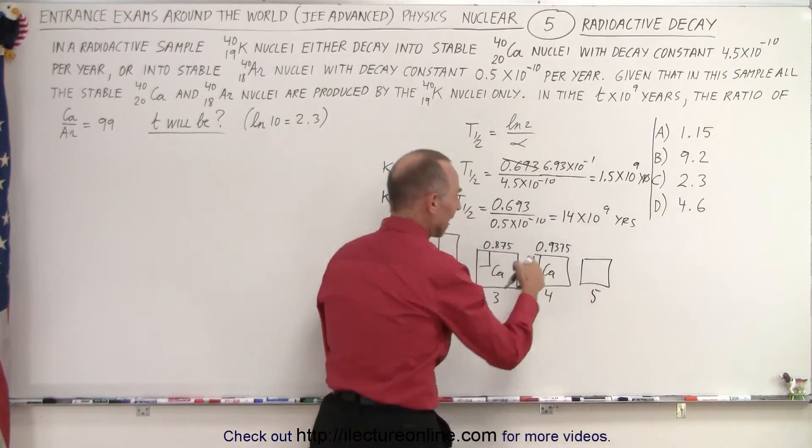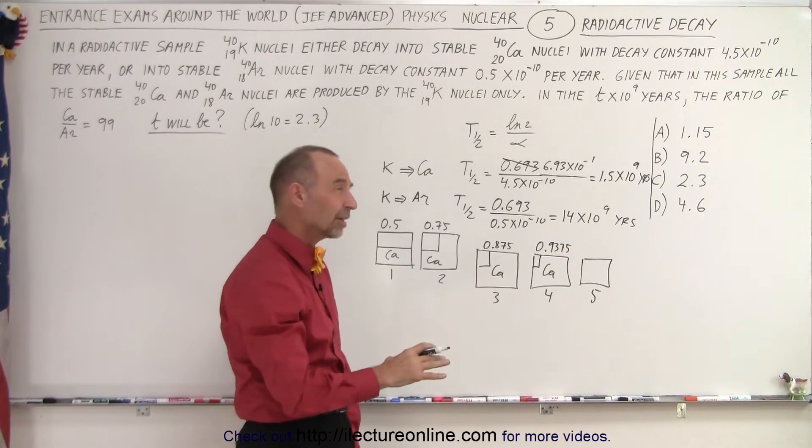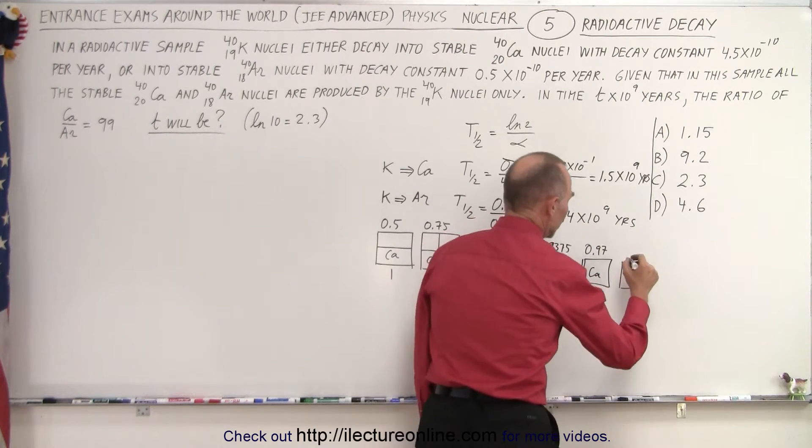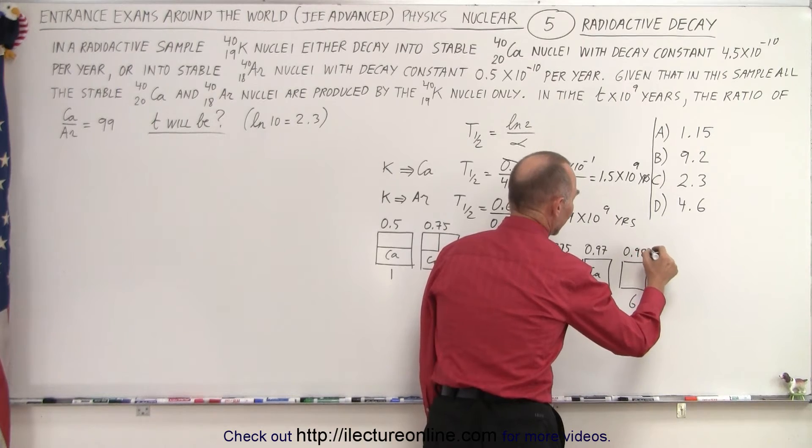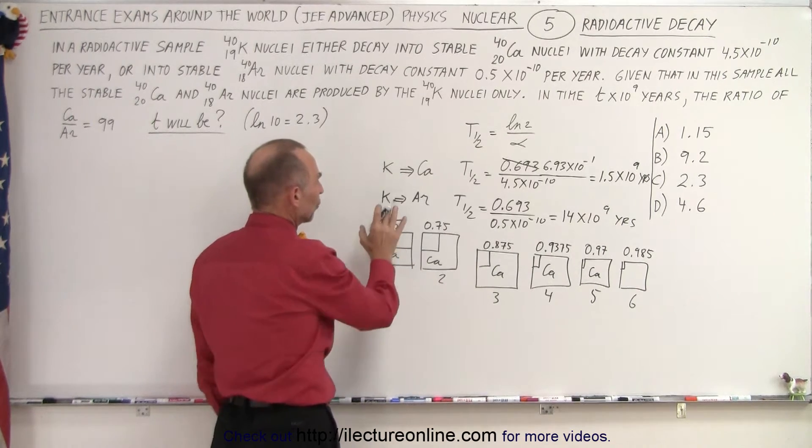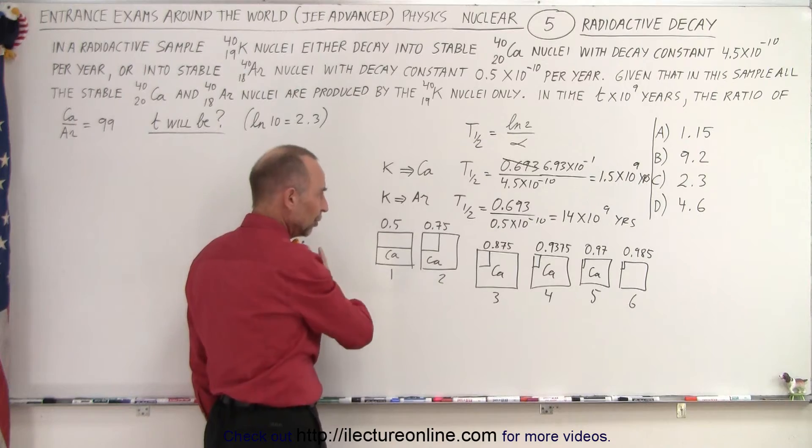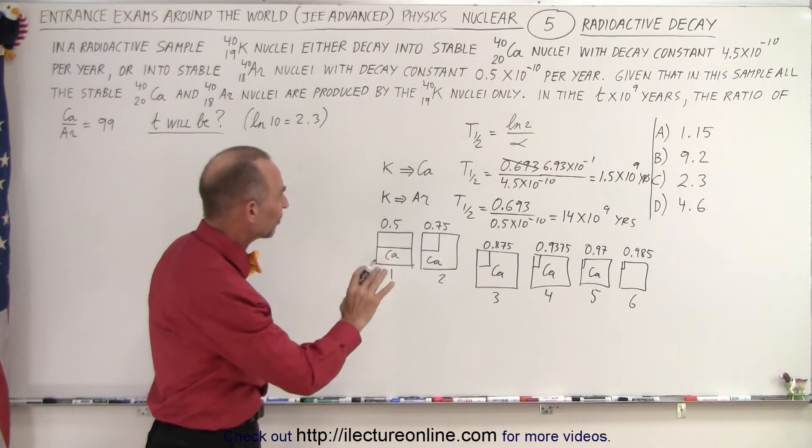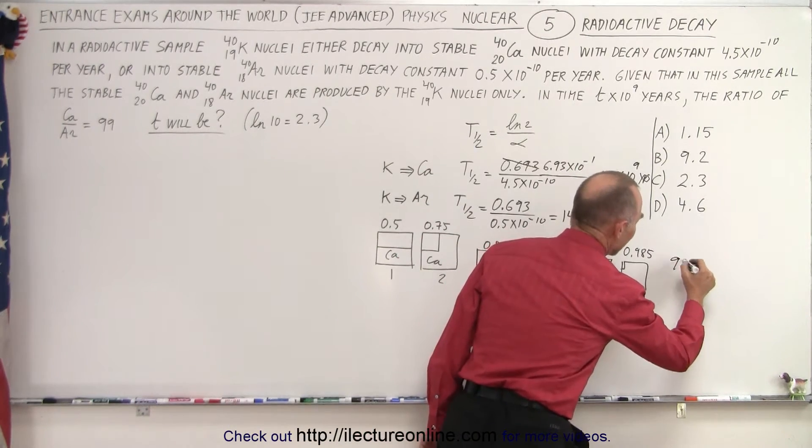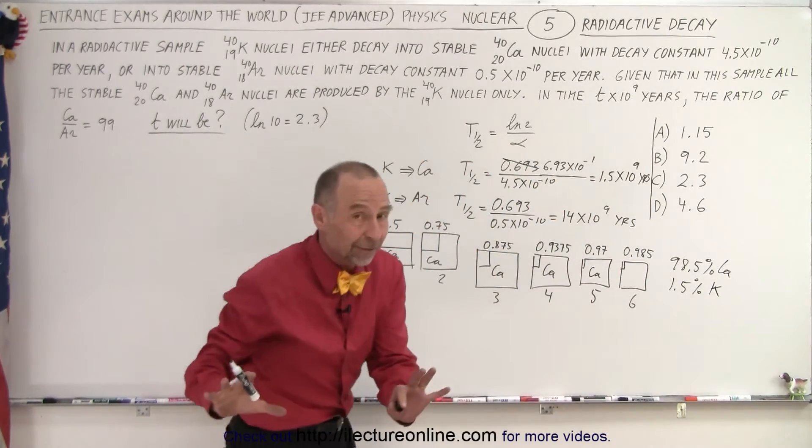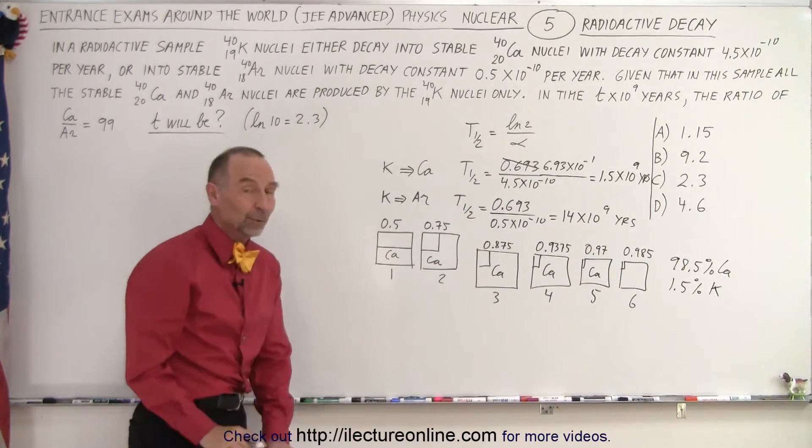After five half-lives, about 94, half of that would be 6, so about 0.97. And so after six half-lives, you would now be at about 0.985, roughly speaking. So without a calculator, you can say that after six half-lives, if all they did was go from potassium to calcium, forget the argon for a moment, you'd have 98.5% calcium and 1.5% potassium. But that's considering nothing was decaying to argon, which is of course not the case.